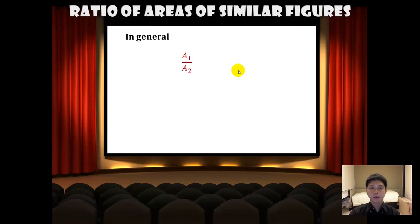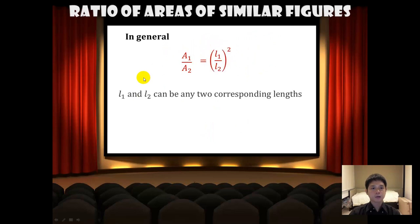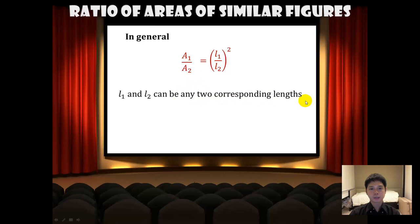Therefore, A1 over A2 will be equal to the square of the ratio of the corresponding lengths. L1 and L2 can be any two corresponding lengths — it can be the base, the height, or the slant length. It doesn't matter which length you use, as long as they are the corresponding lengths.